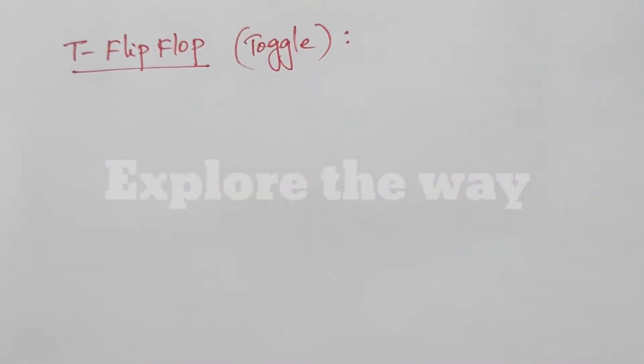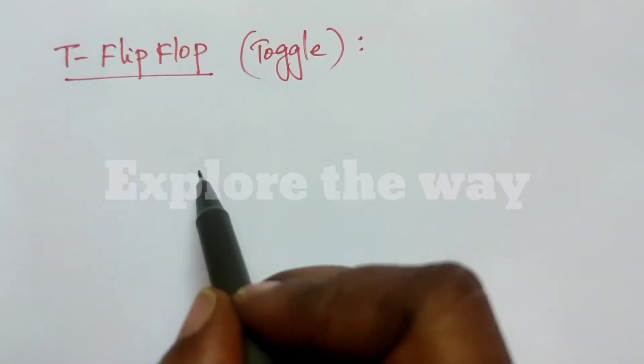T flip-flop which is also called toggle flip-flop. That means its output toggles at every positive or negative clock edge. Let us see the symbol for T flip-flop.